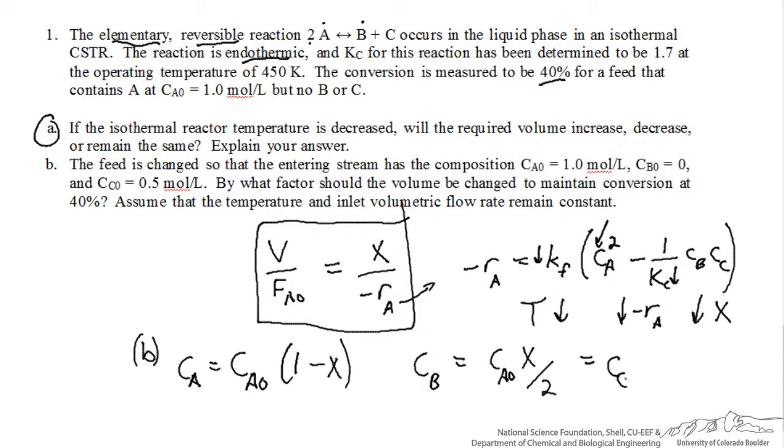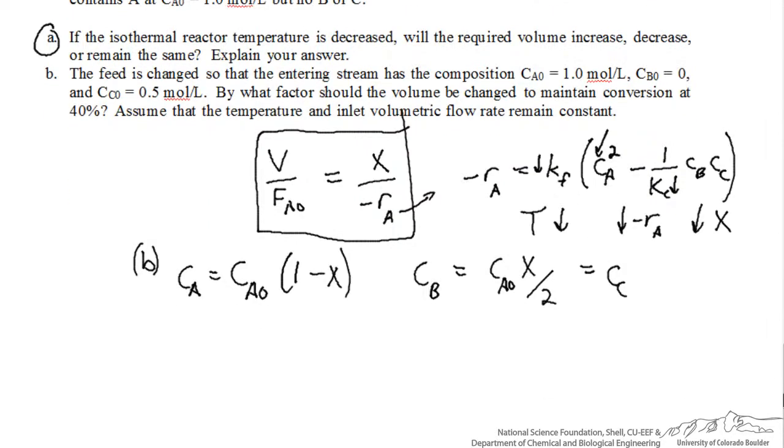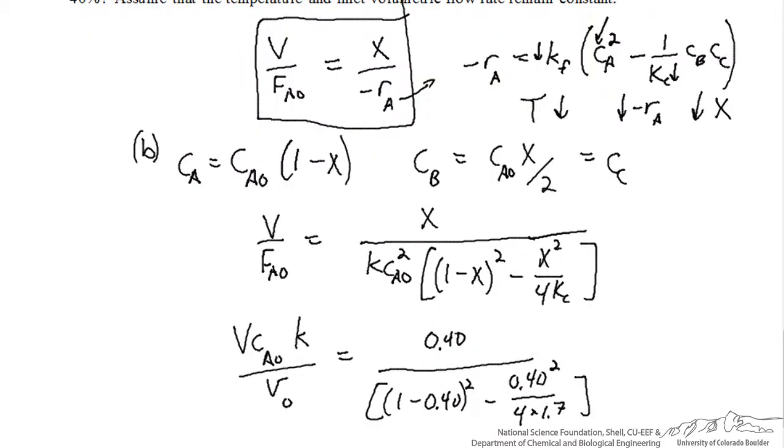Now we have enough information to substitute into the boxed equation here and cast that equation entirely in terms of conversion. We'll do that combining step here. When I plug all of that in, I get the expression that's shown here. Then I can do a little more rearrangement.